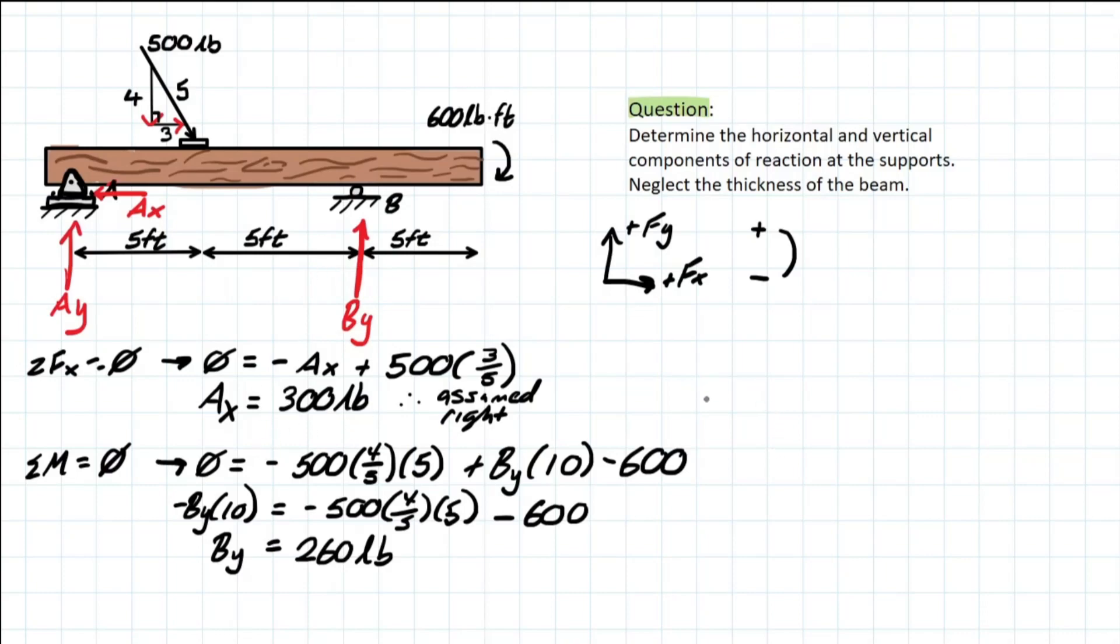Now we can actually consider the summation of forces at y, because we're only left with one unknown for y. So we have Ay minus our y component for the 500 pound force, because it's acting downwards. Remember, our conventions are cool. And we have By, which you solved earlier, which is 260 pounds upwards. Solving for Ay, you're going to be left with 140 pounds. Our sign is positive, which means we assumed the direction of the force properly.